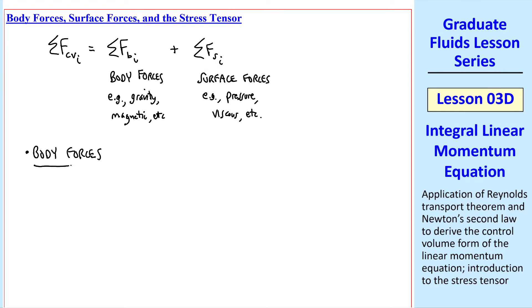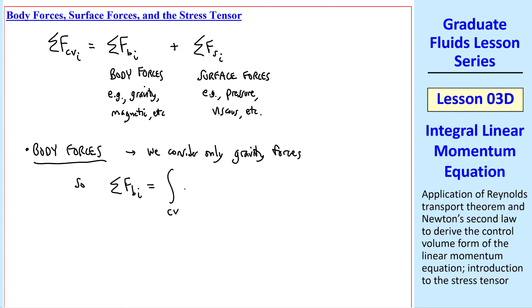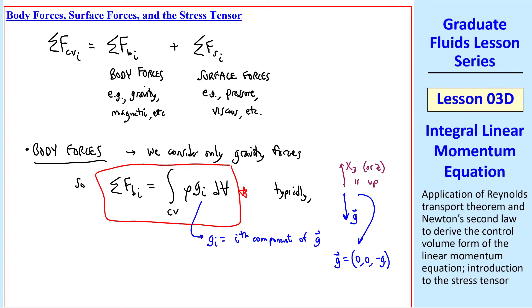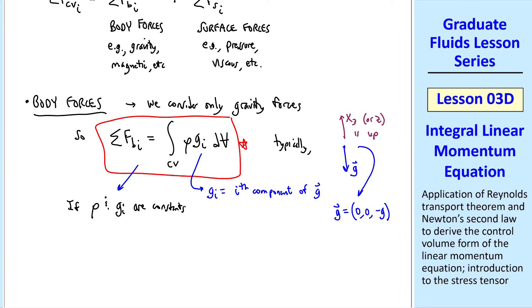Let's look at the body forces. We consider only gravity forces here. So sigma fb sub i is the integral over the control volume of rho gi dv, where typically, if x3 or z is up, the gravity vector is down. In tensor notation here, gi is the i-th component of gravity vector g. So for this case, we only have the third component acting in the negative x3 direction. As a sanity check, if rho and gi are constants, sigma fbi is rho gi, and this integral just gives us the volume, which we recognize as the weight of the fluid. But this form is valid even if the flow is compressible, and even if gravity varies throughout the volume, though that would be the case only for extremely large control volumes.